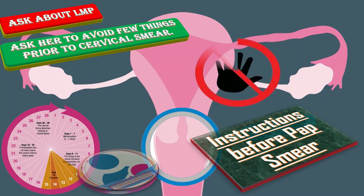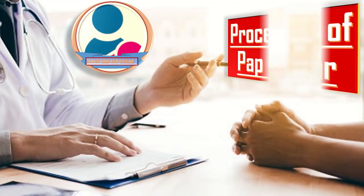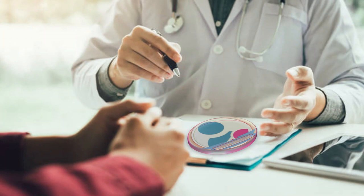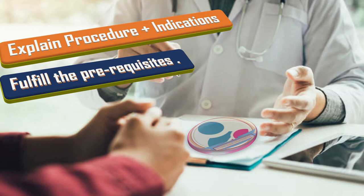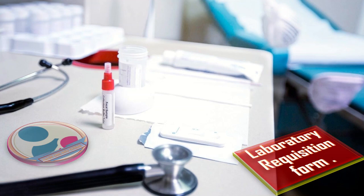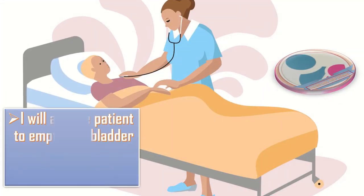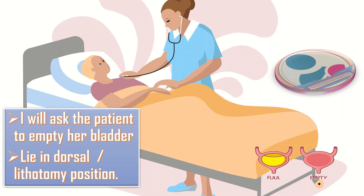Ask her about vulva and vaginal symptoms. The procedure of pap smear: I will introduce myself to the patient and take her introduction. I will explain the whole procedure and its indications to the patient. I will fulfill the prerequisites before performing pap smear. I will fill the laboratory requisition form with the patient details, the LMP, and all the essential requirements. Then I will ask the patient to empty her bladder and lie in dorsal lithotomy position, as you can see here.